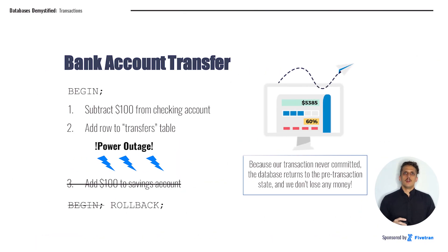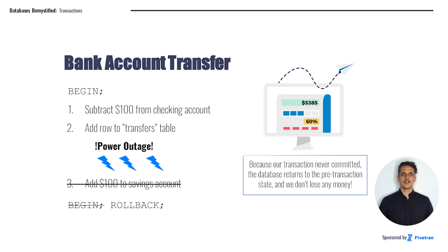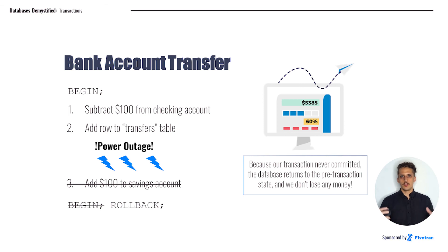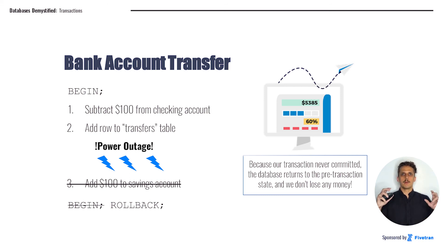Let's go back to our motivating example with the bank account transfer. If we wrap our transfer process in a transaction, we will know exactly what happens when the power goes out — the transaction doesn't commit, so the changes were never saved, and we can be sure that we didn't accidentally misplace some of our clients' money. Once the system is back up and running, the system or the user can retry the transaction without any issue. By grouping these important steps together, we make sure we don't lose important data and that all of the steps happen together or don't happen at all.